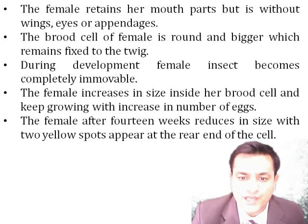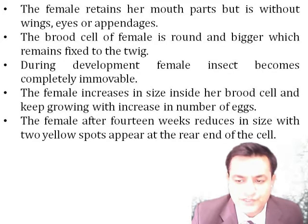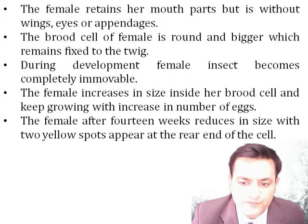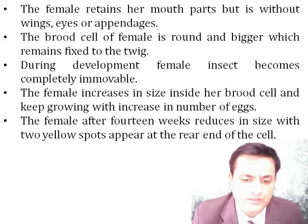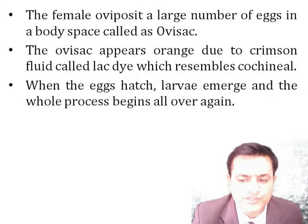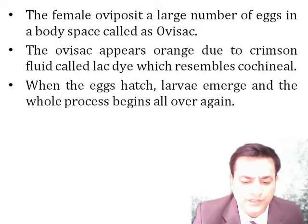The brood cell of the female is round and bigger, consisting of developing embryos inside. After 14 weeks, the female reduces in size with two yellow spots appearing at the rear end of the cell. The female oviposits a large number of eggs in a body space called the ovisac. The ovisac appears orange due to crimson fluid filled inside the body — this is the lac dye. The eggs hatch, larvae emerge, and the whole process begins all over again.